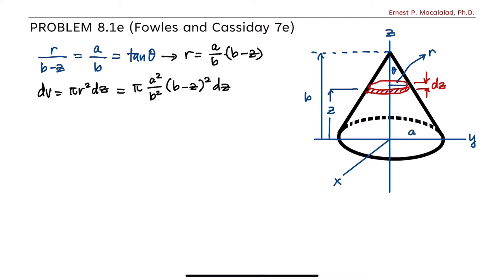So by symmetry, the x and the y component of the center mass of this right circular cone is equal to 0. So the only thing that we need to calculate is the center mass along the z axis. So zcm is equal to the integral of rho z dv divided by the integral of rho dv.